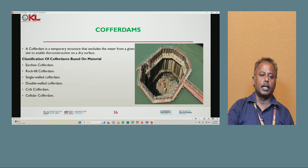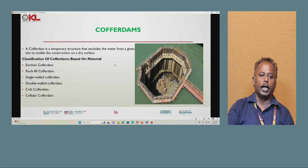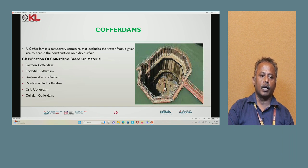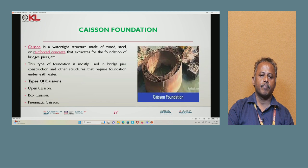Next is cofferdam. A cofferdam is a temporary structure that excludes water from a given site to enable construction on a dry surface. The different types of cofferdam are: earthen cofferdam, rockfill cofferdam, single wall cofferdam, double wall cofferdam, crib cofferdam, and cellular cofferdam.